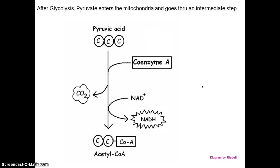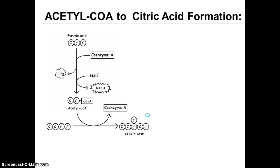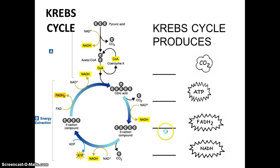After glycolysis, you have pyruvic acid — a three-carbon molecule — which is broken down to a two-carbon molecule, attaches to coenzyme A, and becomes the very reactive molecule acetyl-CoA, losing that carbon as CO2 and electrons picked up by NADH. Acetyl-CoA goes into the citric acid cycle, starting with a four-carbon compound called oxaloacetate, forming citric acid — a six-carbon molecule. That six-carbon molecule is further broken down, recycling the four-carbon molecule. Per cycle: three CO2, one ATP, one FADH2, and four NADH.